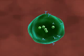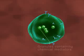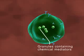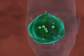These IgE antibodies sit on the surface of the mast cells. The mast cells have granules containing chemical mediators like histamine and prostaglandins, etc.